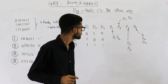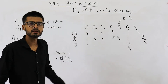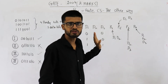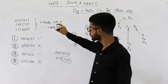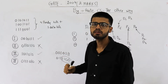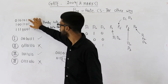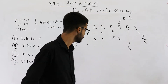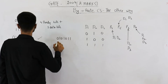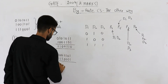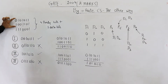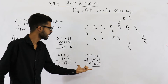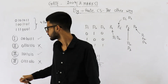Now let's discuss Method 2. Suppose you don't want to do all of that analysis because there's a lot of hit-and-trial involved and it's time-consuming. There is one easy method: you just take the XOR of two valid code words, and whatever result you get will also be a valid code word. For example, let's perform XOR of the given code words — the result must also be a valid code word.